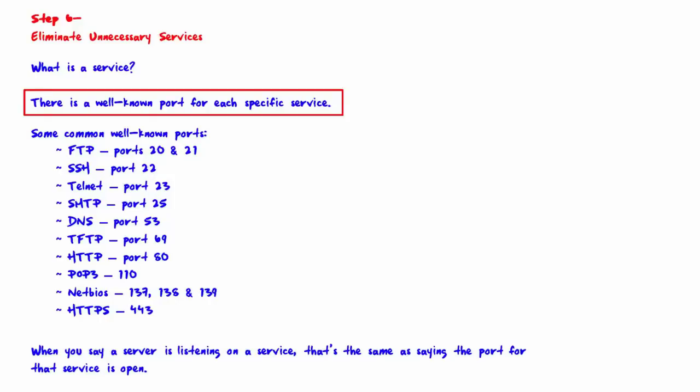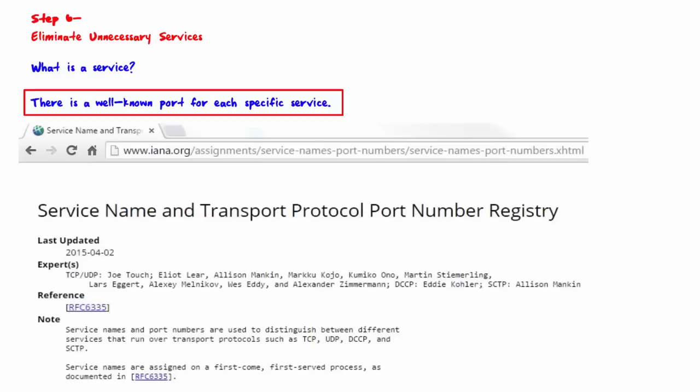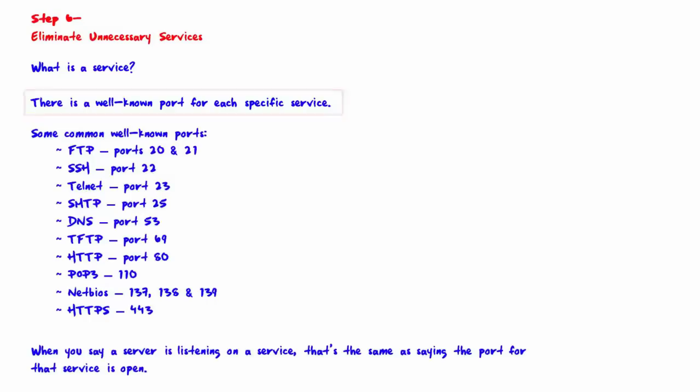There is a well-known port for each specific service. The complete list can be found at www.iana.org — the Service Name and Transport Protocol Port Number Registry. Service names and port numbers are used to distinguish between different services that run over transport protocols such as TCP and UDP.